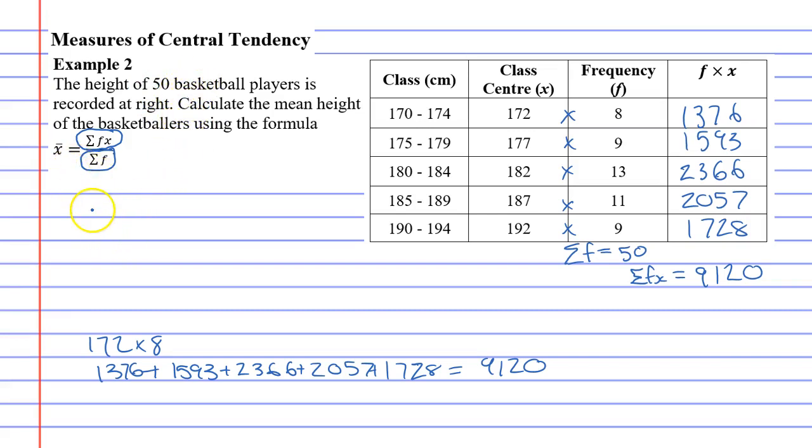So going back to our formula, x bar stands for average or mean, and it's saying go 9,120 and divide that by the number of players, which is 50. And that gives us our mean of 182.4, being the average height of these players.